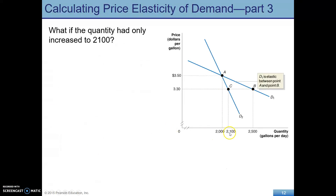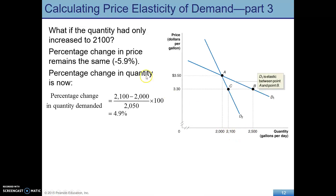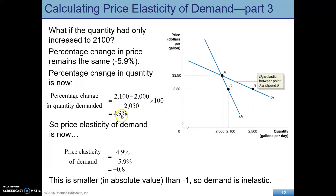So what if the quantity had only gone up to 2,100 instead of 2,500? The percentage change in price remains the same, and the average price hasn't changed. So what we need to look at is now this percentage change in quantity demanded. New minus old is going to be 100 over the average times 100, giving us a new percentage. Dividing by that same price number gives us negative 0.8. In absolute value this is smaller than 1, so this is inelastic demand for moving from A to C.